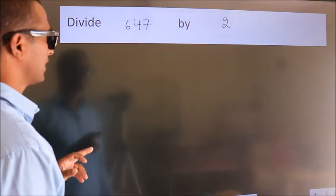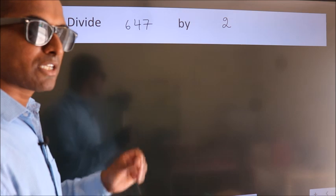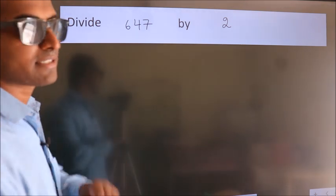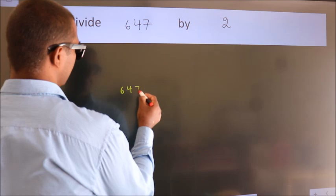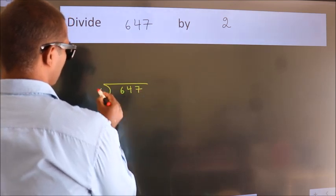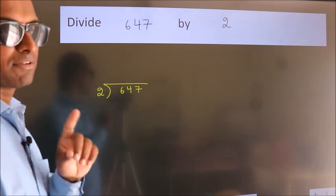Divide 647 by 2. To do this division, we should frame it in this way. 647 here, 2 here. This is your step 1.